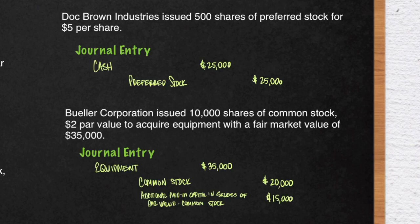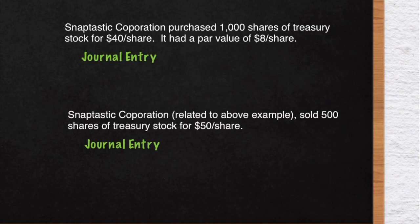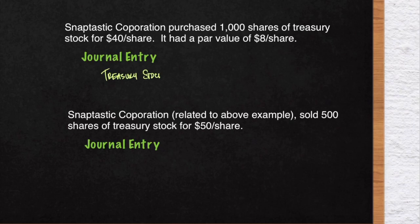Next, we have Snaptastic Corporation who purchased 1,000 shares of treasury stock for $40 per share. It had a par value of $8 per share. This is a case where the corporation buys back its own stock. If that is the case, then your debit will be treasury stock for $40,000 — that's the 1,000 shares multiplied by the $40 per share — and then a credit to cash for $40,000.